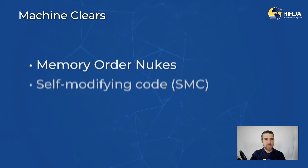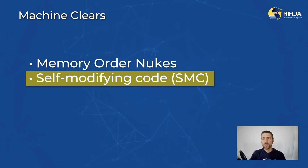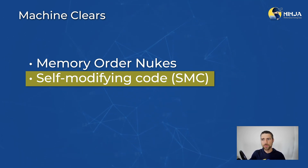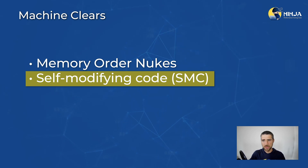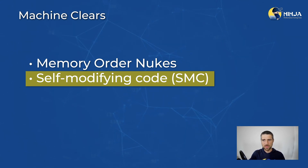I also briefly want to mention another source of machine clears: self-modifying code, which can happen when a program speculatively executes some code that gets overwritten by that same program. I won't dig into the details here — you can read more about self-modifying code online — but SMC is a constant source of headaches for CPU architects.